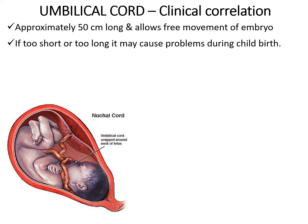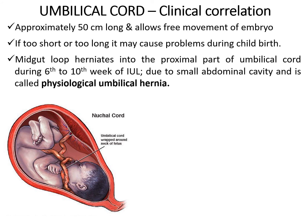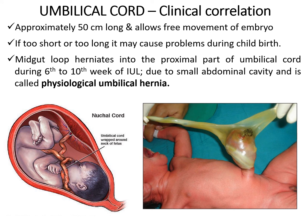Another condition associated with the umbilical cord is physiological umbilical hernia, which normally occurs due to herniation of the midgut loop into the proximal part of the umbilical cord during the 6th to 10th week of intrauterine life, due to a small abdominal cavity. Sometimes this may persist after birth, leading to a condition known as congenital umbilical hernia.